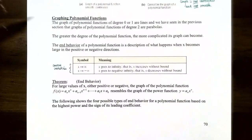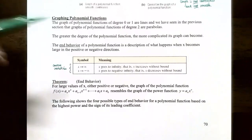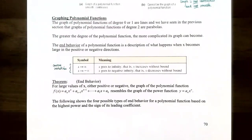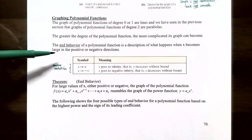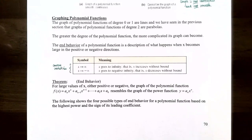The graph of a polynomial function of degree 0 or degree 1 is a line. Degree 2 polynomial functions — quadratic functions — have parabola-shaped graphs. The greater the degree, the more complicated the graph becomes. The first thing to discuss is the end behavior of a polynomial function's graph: will the graph continue going up or down on the right end or the left end? End behavior describes what happens as x becomes very large or very negative.